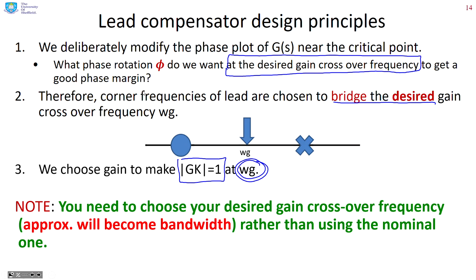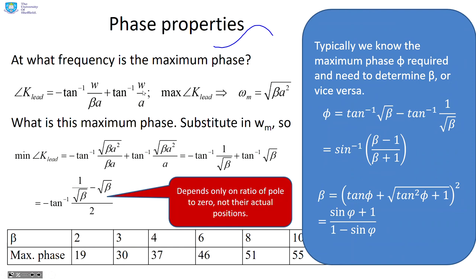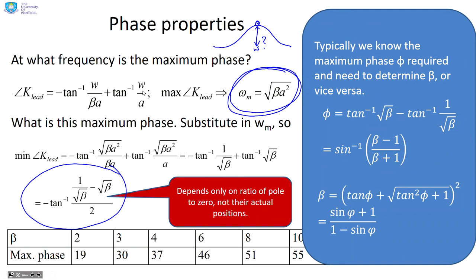Key points: choose your desired gain crossover frequency, which will approximately become your closed-loop bandwidth. The maximum phase occurs at the geometric mean of the pole and zero — multiply the pole and zero together and take the square root. The size of that peak is given by a specific formula. You can tabulate it: for different values of beta, you can find how large the phase characteristic is. This is quite useful — if you know you need about 40 degrees phase rotation, you know you need beta between 4 and 6.